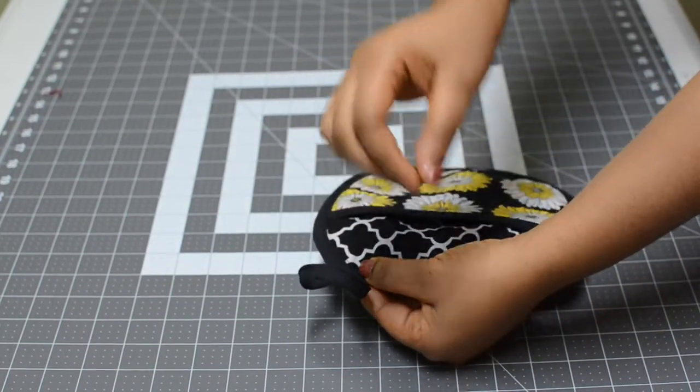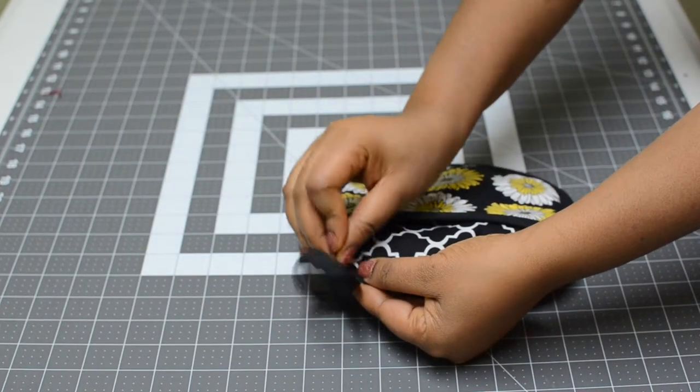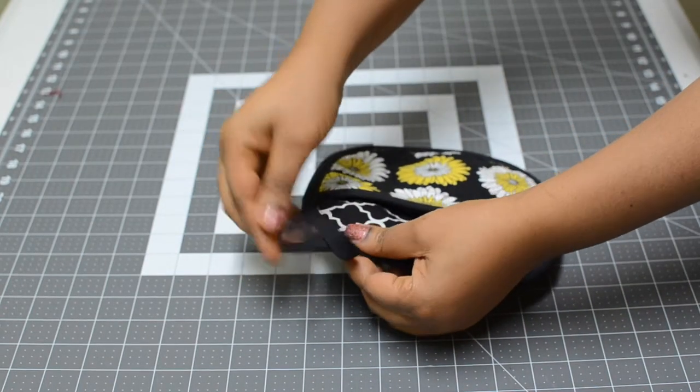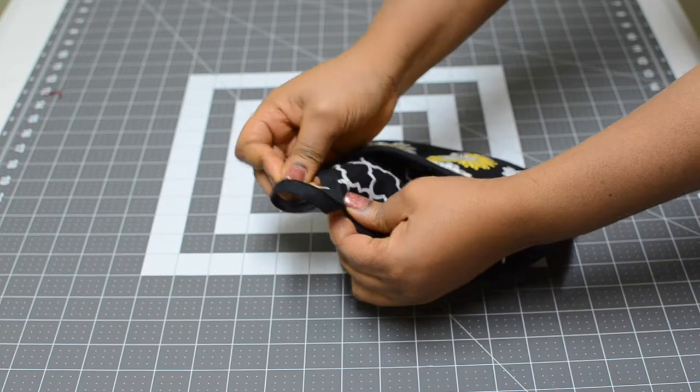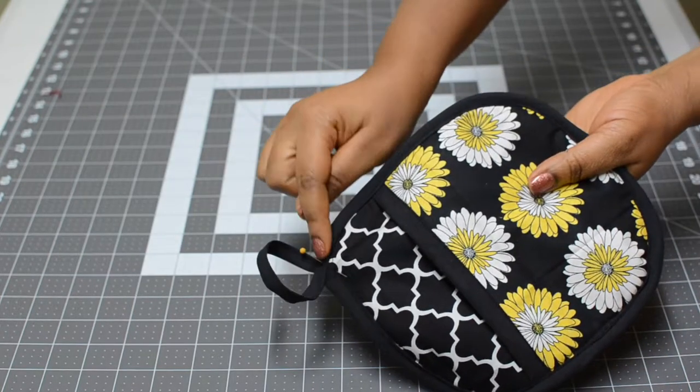This would be the holder of the hot pot pad, so you can use it to hang it somewhere near the stove or wherever you want to hang it. Flip it around and use a pin to hold it down, then take it to the machine and sew it down.